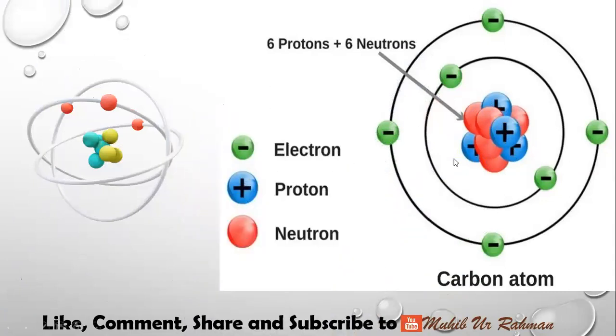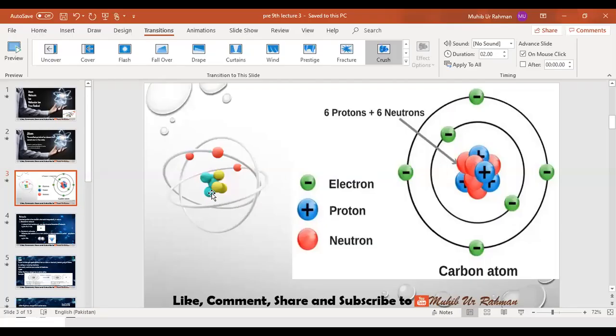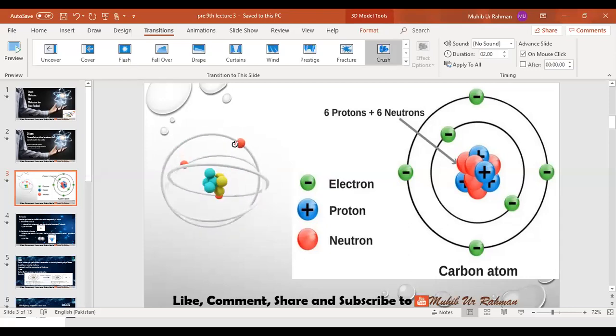Now I'll show you the 3D structure of an atom. The atom's 3D shape has a central part called the nucleus. The yellow and blue balls represent this central nucleus. Around the nucleus, electrons revolve in specific paths, orbits, or shells.